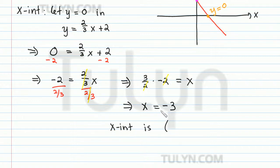So our x-intercept is the point with coordinates x comma y. So x is equal to negative three, and y we let equal to zero in the beginning. So our x-intercept is the point negative three comma zero.